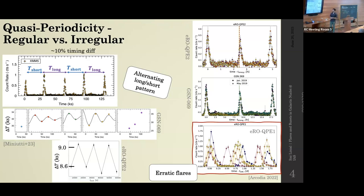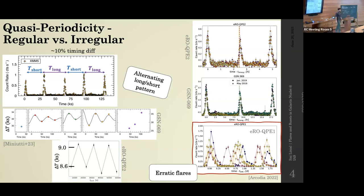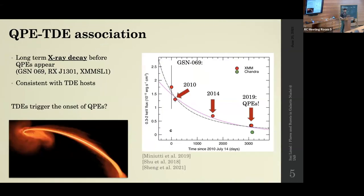In at least some systems we see flares come in two recurrence times — short and long — alternating between the two. This is seen in GSN069 and for one epoch of EURO QPE2. You can also see this from a paper by Ricardo showing that when you fold the light curve of pairs or triplets of flares, for the ones with regular behavior there's one total period which is the sum of the short and the long, while other systems show more erratic behavior where flares come in a wide range of phases with respect to the total average period.